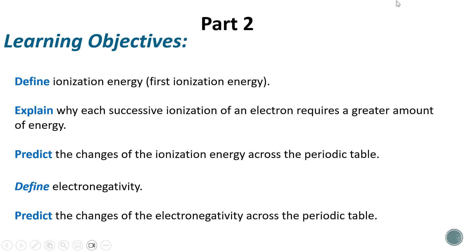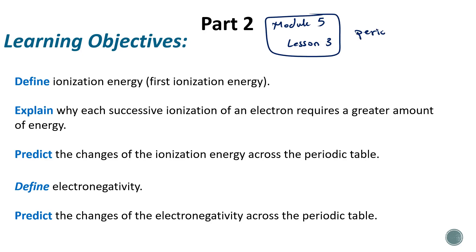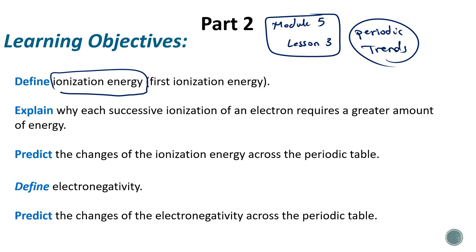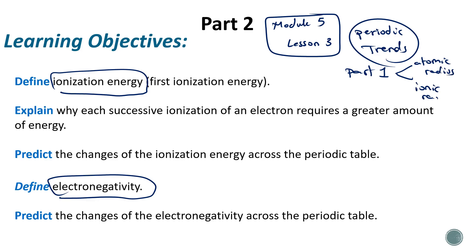Hello again guys, we are continuing Module 5 Lesson 3, which talks about periodic trends. Now we are going to talk about other periodic trends, mainly ionization energy and electronegativity. In Part 1, we talked about atomic radius and ionic radius. After this video, you should be able to define ionization energy, explain why each successive ionization of an electron requires a greater amount of energy, predict the changes of ionization energy across the periodic table, define electronegativity, and predict changes of electronegativity across the periodic table.